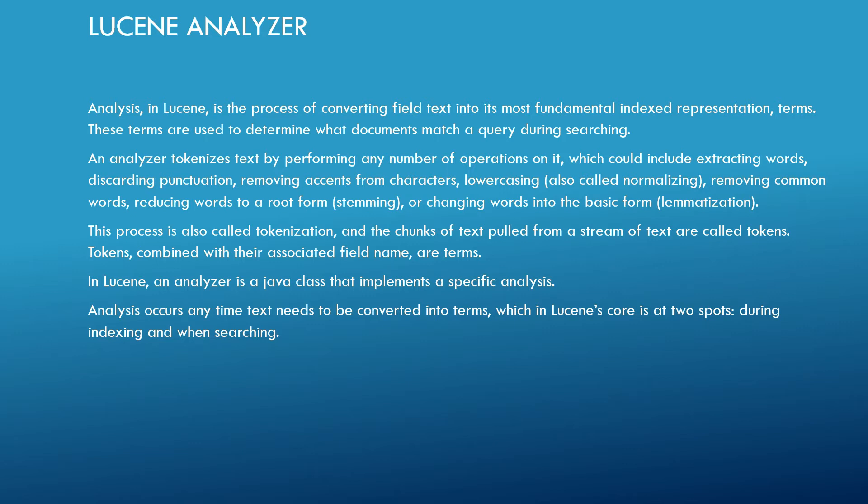Tokens are combined with their associated field name. In my case, 'id' is the field name. The data in that field is converted into tokens. For example, if 'TEST' in caps is the value, it will be converted to lowercase — that's called a token. Tokens combined with the field name 'id' are called terms, and whenever somebody searches, the data is matched against these terms.